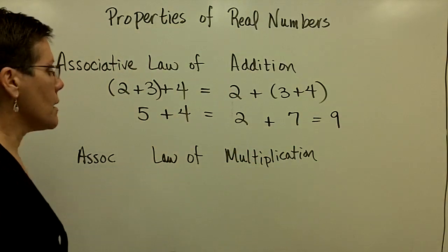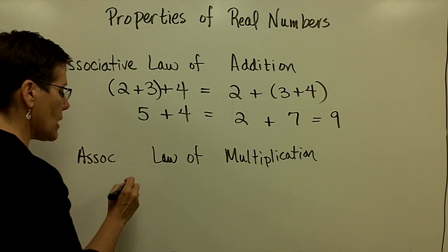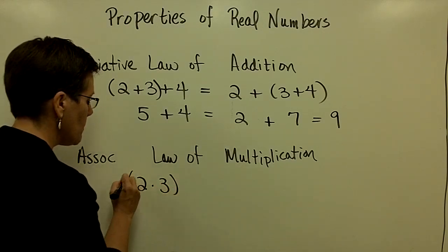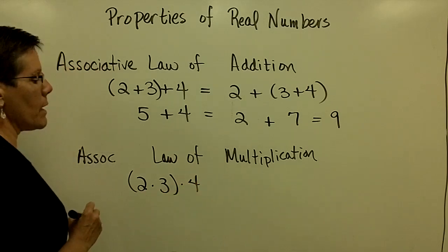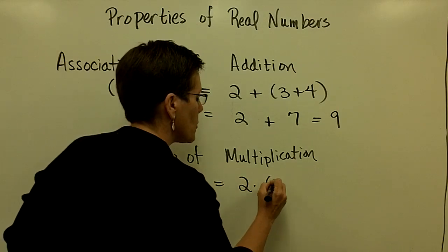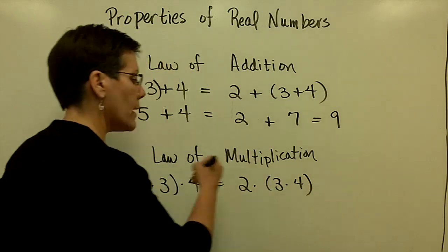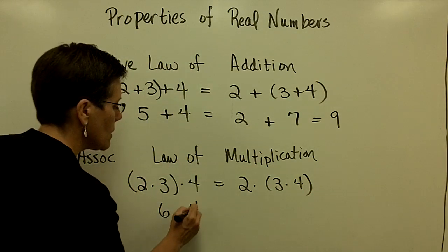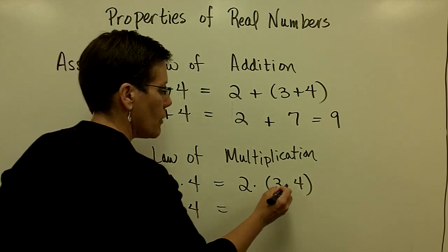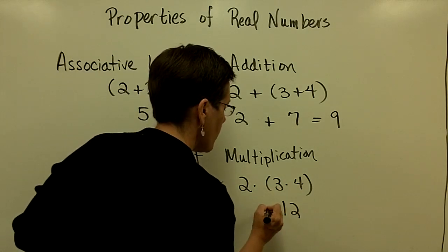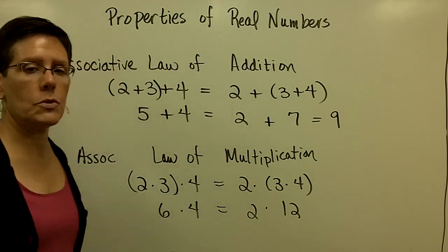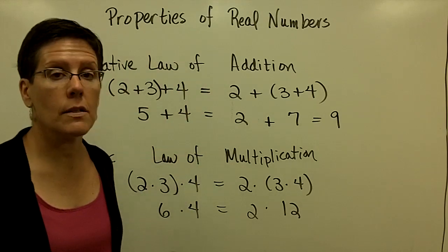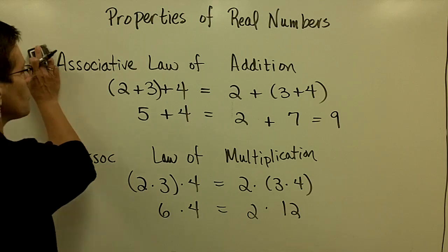And that is 9 in this particular case. So I could group 2 times 3 in a set of parentheses and then multiply it by 4. Or I could group the 3 and the 4 and then multiply it by 2. Here, in the parentheses first, 6 times 4 is 24. Over here, parentheses first, 12 times 2, also 24. The associative laws have to do with the placement of parentheses in the same grouping of terms and or factors.